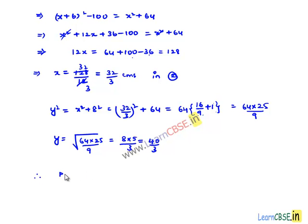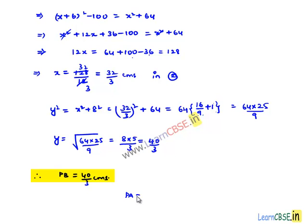Therefore PB equals 40 by 3 centimeters. Since tangents drawn from an external point are equal in length, PA is also equal to 40 by 3 centimeters. That's the solution.